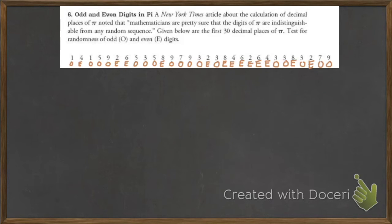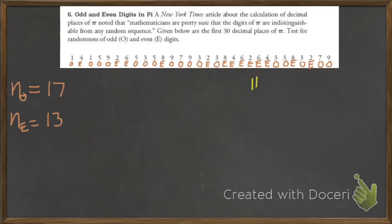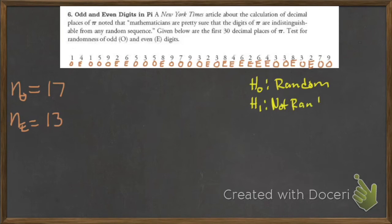Odd, odd, even, odd, even, odd, odd. So we've listed them. How many odds do we have? We have 17 odds, which since there's 30, that means there's 13 evens. We're testing — we first assume that it's random until we're able to show that it's not random.